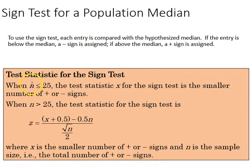The test statistic for the sign test, when n is less than or equal to 25, the test statistic x for the sign test is the smaller number of plus or minus signs. When n is greater than 25, the test statistic is z equal to x plus 0.5 minus 0.5 times n all over the square root of n divided by 2, where x is the smaller number of plus or minus signs, and n is the sample size, the total number of plus or minus signs.